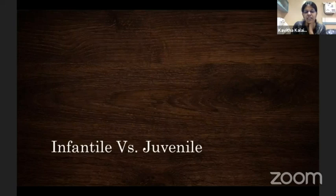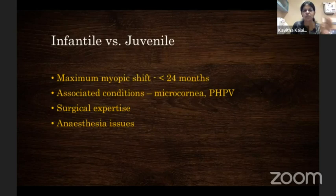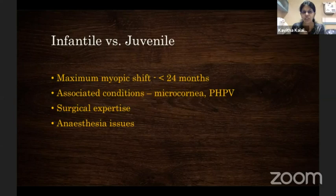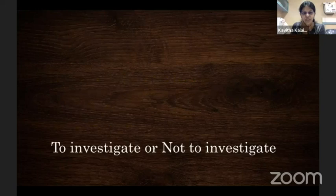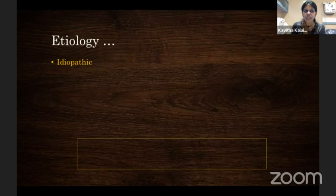Infantile cataracts are different from juvenile or developmental cataracts. In the first 24 months of age there is maximum myopic shift, and these cases can be associated with microcornea, PHPV, and other ocular abnormalities. Surgical expertise is more challenging in an infant with cataract than in an older child, and anesthesia-related issues also come into play. When it comes to cataracts in children, we need to decide whether to do an elaborate investigation or just manage the cataract, and to know the etiology — which differs for unilateral versus bilateral cases.